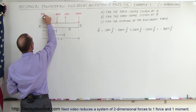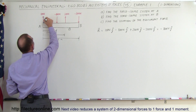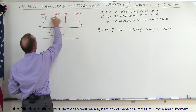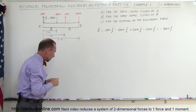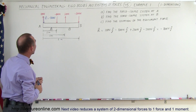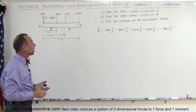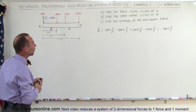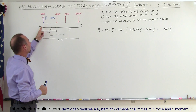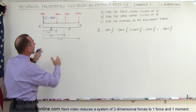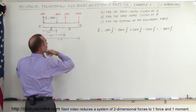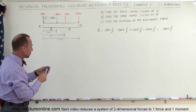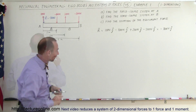Placing the resultant at A, it equals minus 800 newtons in the y-direction. However, we cannot simply replace all the forces with a single equivalent force — we also have to account for the moments they cause. So let's find the total moment at A.